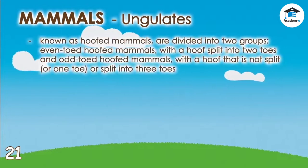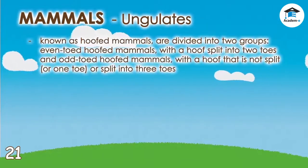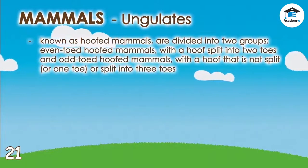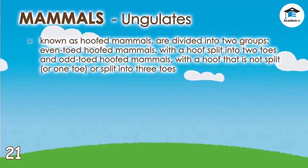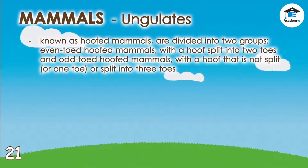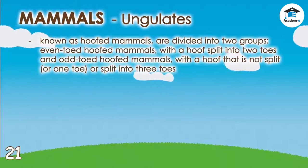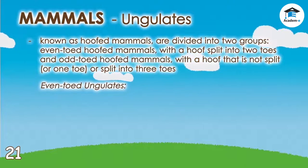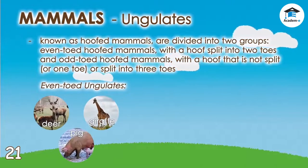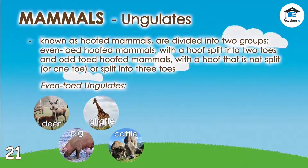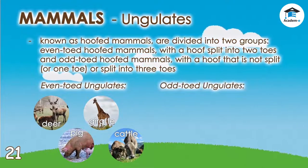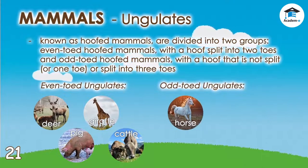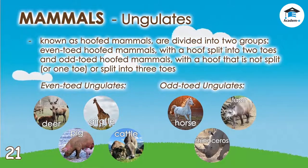Ungulates are known as hoofed mammals, divided into two groups: even-toed hoofed mammals, with a hoof split into two toes, and odd-toed hoofed mammals, with a hoof that is not split or is split into three toes. Even-toed ungulates include deer, giraffes, pigs, and cattle. Odd-toed ungulates include horses, rhinoceroses, and tapirs.